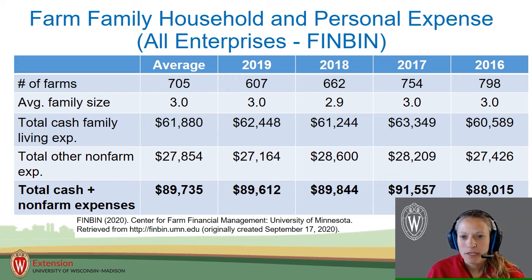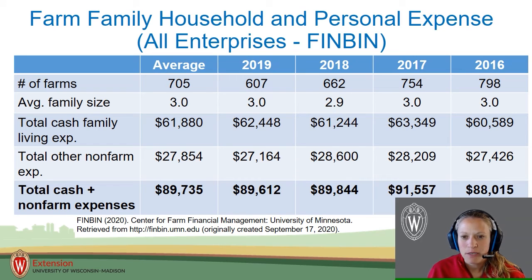The average cash family living cost for the past four years was $61,880. Other non-farm expenditures averaged $27,584 the past four years and include income taxes, furnishings, savings or investments, and other non-farm big-ticket items. While these expenses have remained relatively comparable over these past few years, individuals do need to keep in mind the total cash and non-farm expense of $89,735 when realistically calculating their own household and personal expenses.